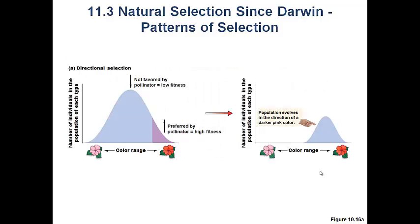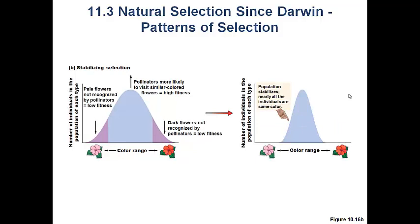Directional selection is the most common type of selection we observe. In directional selection, one extreme of the phenotype is being selected for. This is a histogram — the number of individuals in a category is on the y-axis and color range is on the x-axis. A few flowers are pink, a few are bright red, but most are in the middle. In directional selection, pollinators such as bees, moths, and hummingbirds prefer the bright red flowers, so over generations we see a shift in phenotype from a lighter red toward brighter red at the edge of the color spectrum.